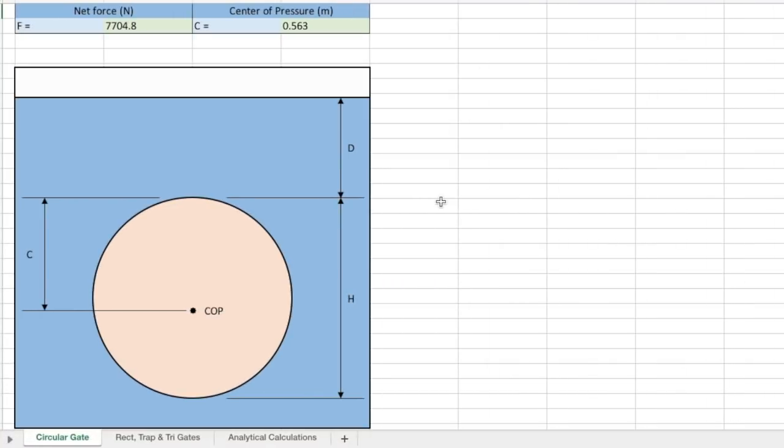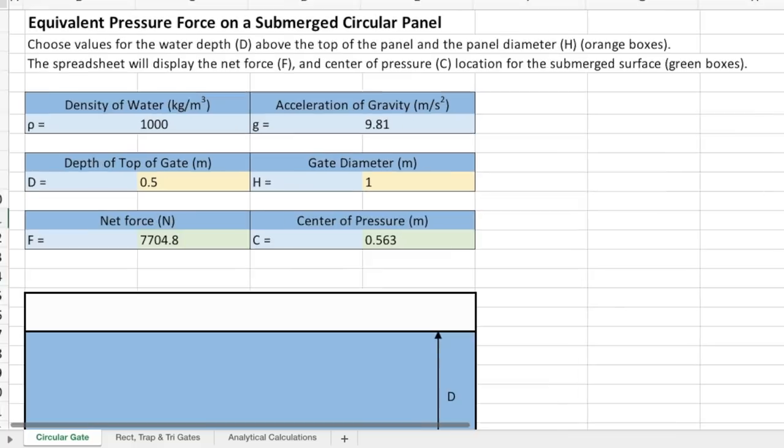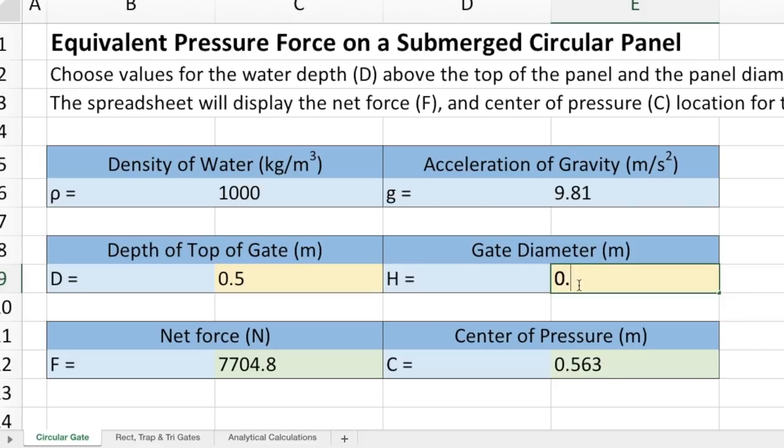We developed a spreadsheet that calculates the magnitude and location of the equivalent pressure force. To use it, we enter the panel diameter, which is 11 cm,